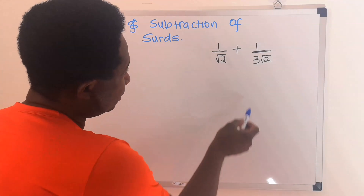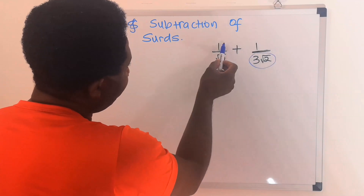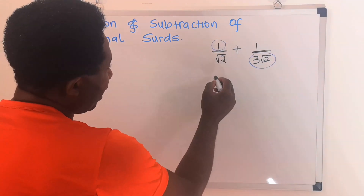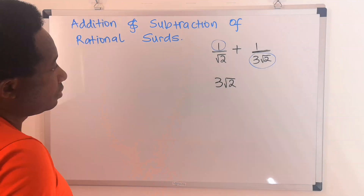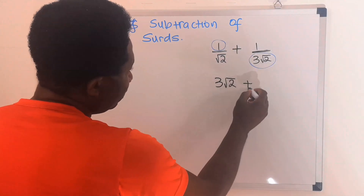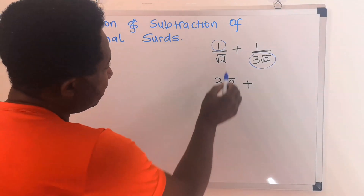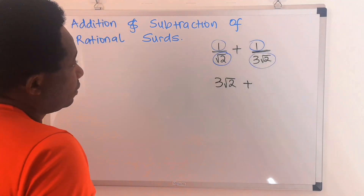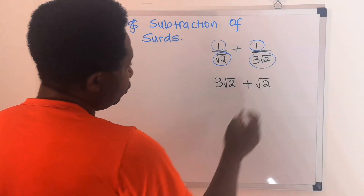Step number 1. We will cross-multiply. This will multiply this, and we are going to have 3 root 2. Next, we are going to bring down this plus. Next, root 2 multiplied by 1, and here we are going to have root 2.